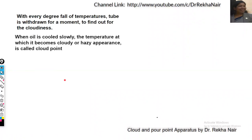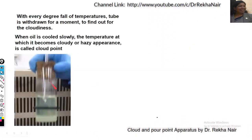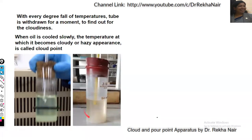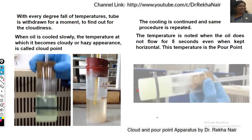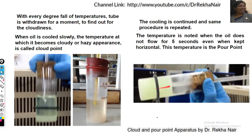With every degree fall of temperature, the tube is withdrawn for a moment to find out the cloudiness. When the oil is cooled slowly and shows a cloudy or hazy appearance, we call it the cloud point. Cooling is continued and the same procedure is repeated. The temperature is noted when the oil ceases to flow for 5 seconds even when kept horizontally — this temperature is called the pour point.